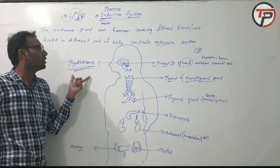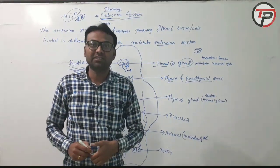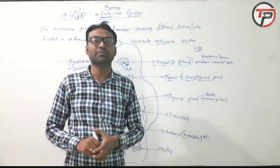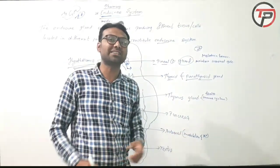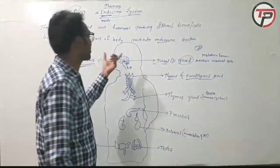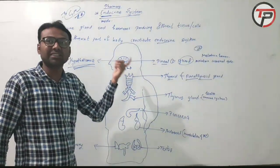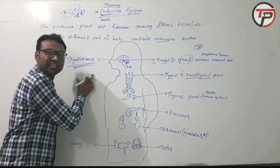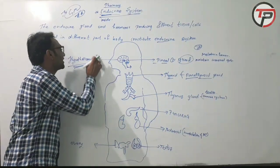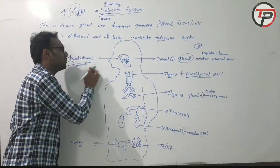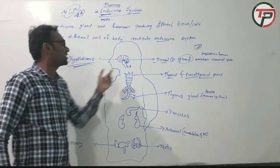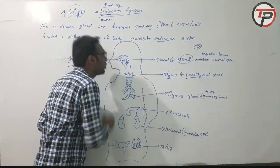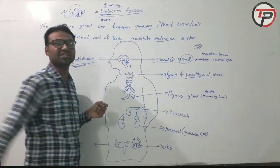First of all, it is very essential to know which part of the brain has control over this particular system. That is the hypothalamus. The hypothalamus is a part of the brain which has control over the whole endocrine system.